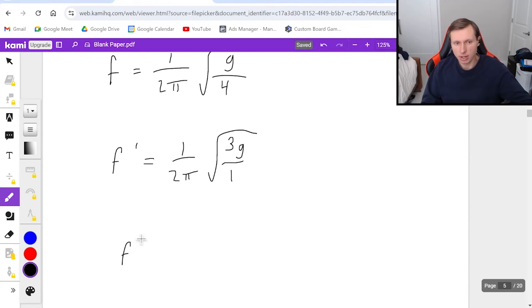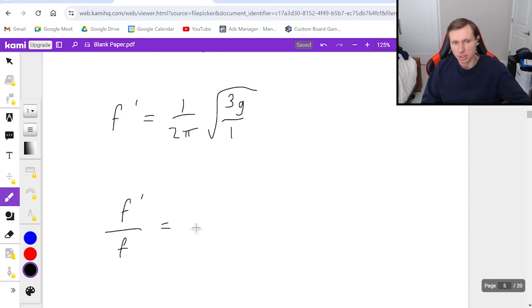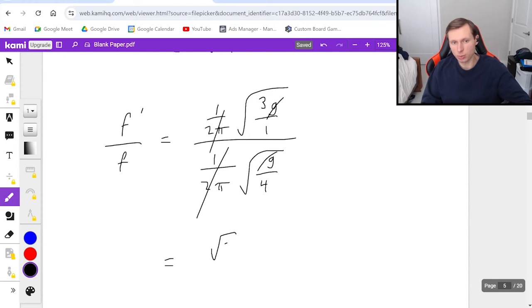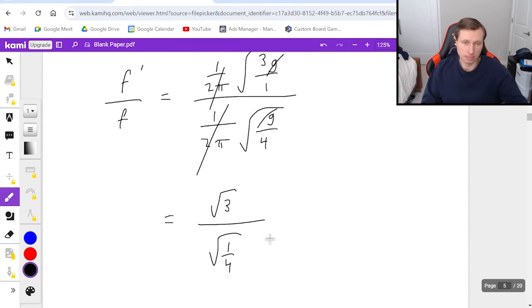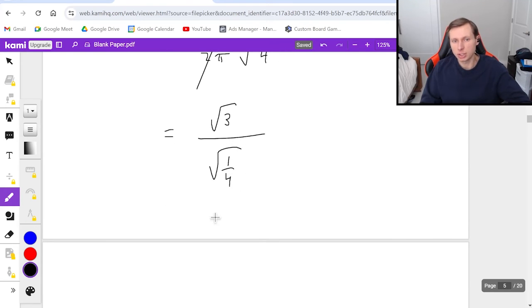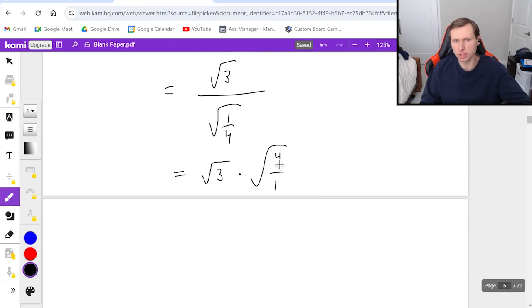Now all I got to do is write f prime over f, and fill in what I just wrote. So the numerator, it's going to be 1 over 2 pi root 3g over 1, divided by 1 over 2 pi root g over 4. And now the question is, I got to simplify this, how do I do it? First, I want you to pay attention, the 1 over 2 pi's do cancel, which is nice. You could even say the g's cancel. And so right now we're left with just root 3 in the numerator, and root 1 fourth in the denominator. Maybe you're confused what to do from here, because this is a complex fraction. But I'll tell you, whenever you have a complex fraction, all you got to do is multiply by the reciprocal, root 4 over 1, like that. And we know the square root of 4 is 2, so it looks like we'll get a final answer of 2 root 3.